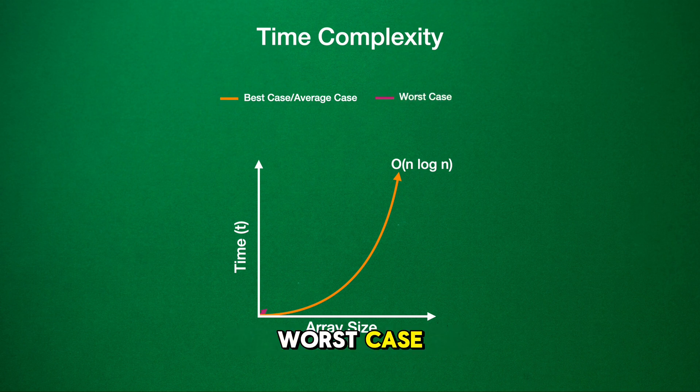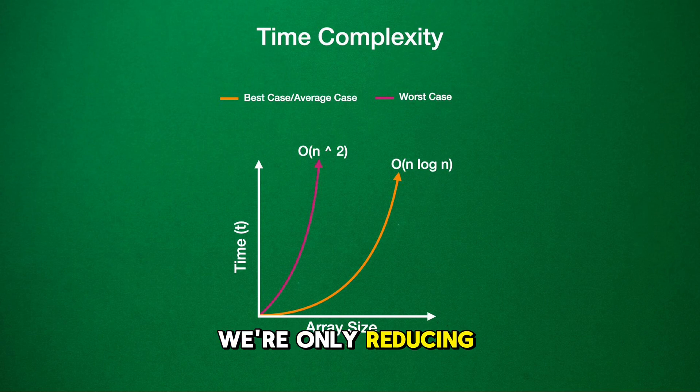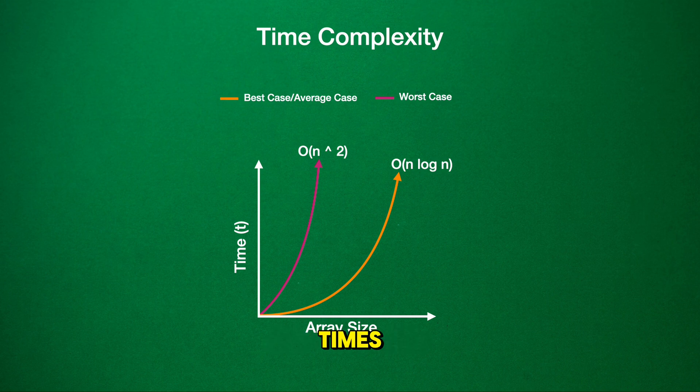However, in the worst case, when the pivot ends up being the smallest or the largest element in each partition, the efficiency drops. Instead of splitting the array evenly, we're only reducing the problem size by one element at a time. This means we have to partition and sort n times, leading to a time complexity of O(n squared).